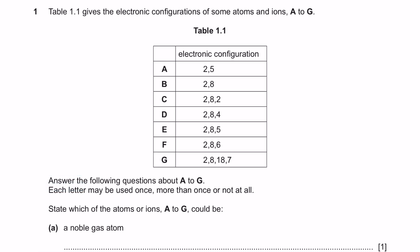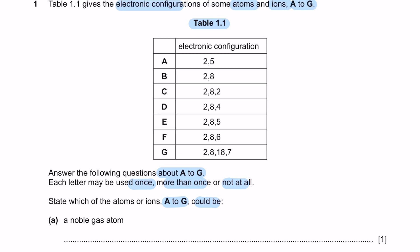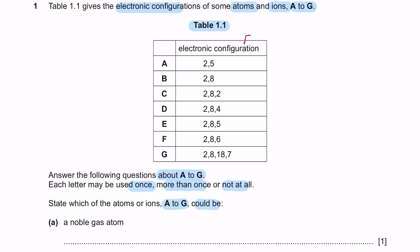Question 1. Table 1.1 gives the electronic configurations of some atoms and ions A to G. Answer the following questions about A to G. Each letter may be used once, more than once or not at all. State which of the atoms or ions A to G could be the following. Let's first look at A to G. From electronic configuration, we can obtain two information: one is the group and the other is the period.